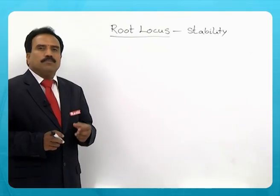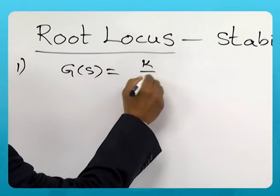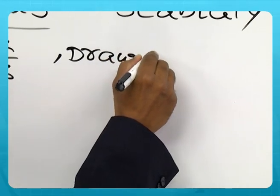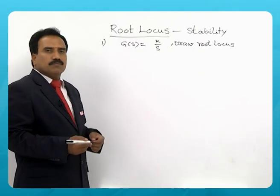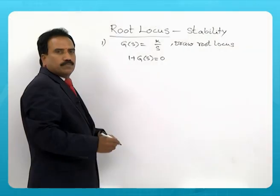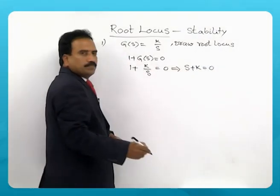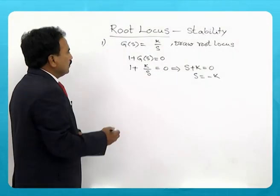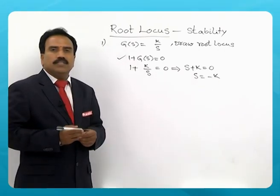Let us consider a simple problem on root locus. G(s) is given by k/s, and you are asked to draw the root locus. Root locus is the locus of roots of the characteristic equation, which is 1 + G(s) = 0. That gives 1 + k/s = 0, which simplifies to s + k = 0. The root is s = −k. This is the characteristic equation, and we need to see how the root varies as k is varied from 0 to infinity.